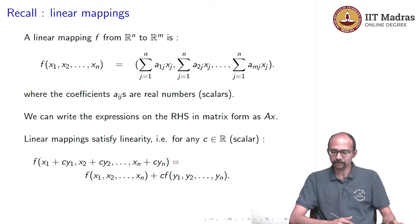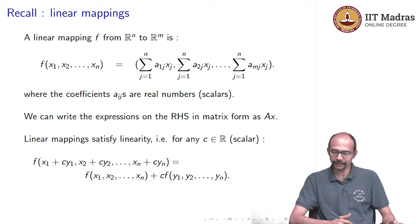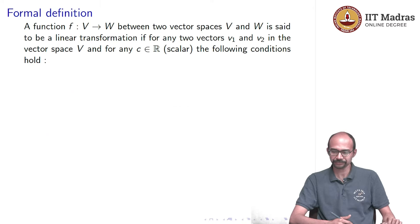Linear mappings satisfy linearity: f(x1 + c·y1, x2 + c·y2, ..., xn + c·yn) equals f(x1, x2, ..., xn) plus c times f(y1, y2, ..., yn).